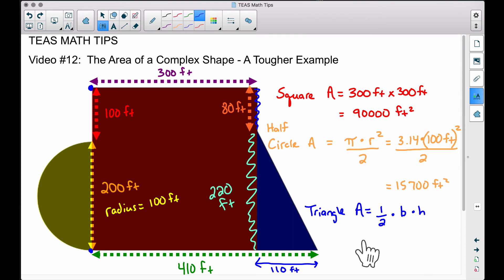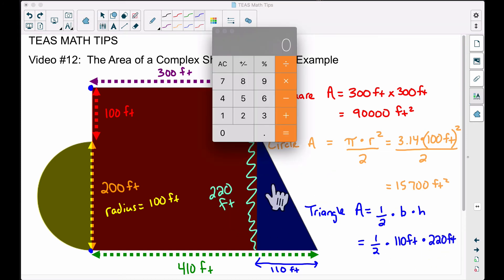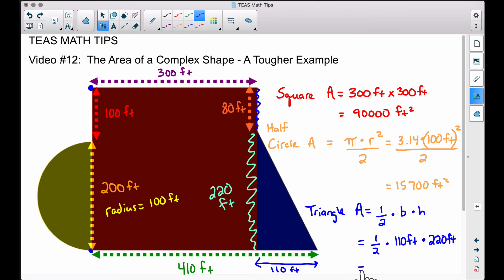Therefore we have one half times our base of 110 feet times our height of 220 feet. So one way we could do this is we can go ahead and multiply the 110 times the 220, but now we want to find half of that, so we can just divide by two. Therefore, the area of the triangle is 12,100 square feet.